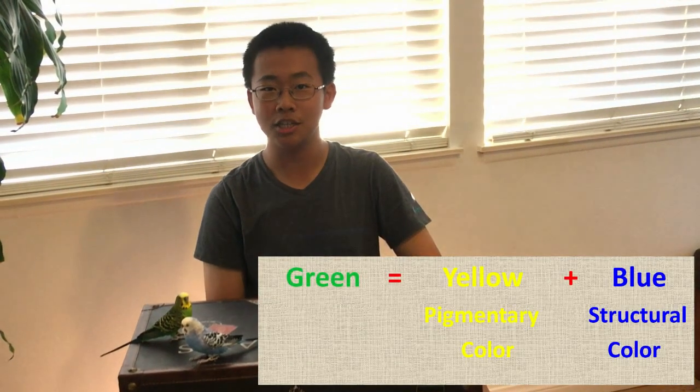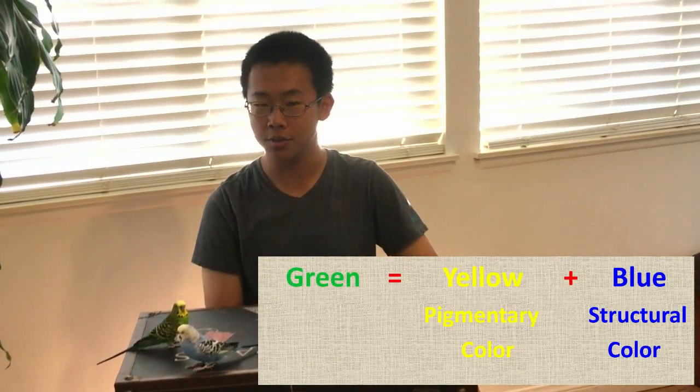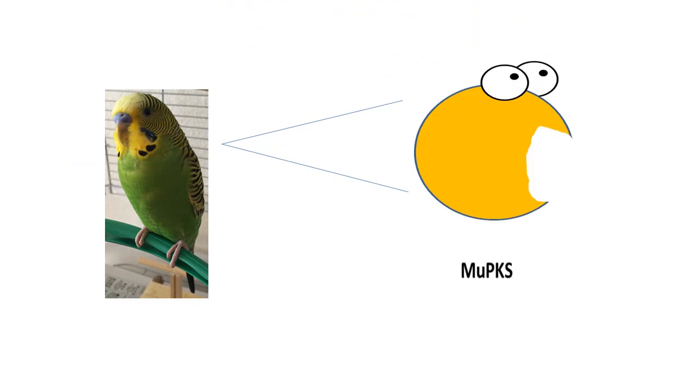The green color on Little Green is caused by the combination of the pigment color, yellow, and the structural color, blue. The difference between Little Green and Little Blue is the yellow pigment. Little Green has it while Little Blue does not.